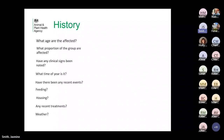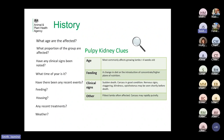In terms of history, things that move pulpy kidney up your differential list include: age — it mainly affects growing lambs over four weeks old; a change in diet or introduction of concentrates, which is a known risk factor. Pulpy kidney usually causes sudden death, so carcasses are typically in good body condition. If seen just before death, lambs may show nervous signs: staggering, blindness, opisthotonus. Farmers will often say it was the best or fittest lamb that died. If a carcass is already decomposing within a few hours, that could raise suspicions of Clostridia.